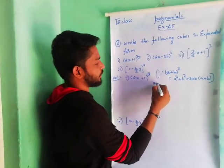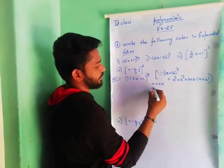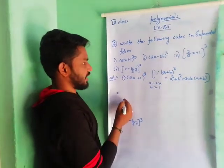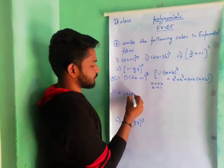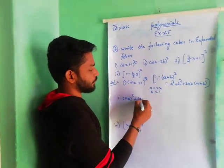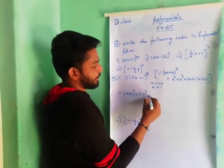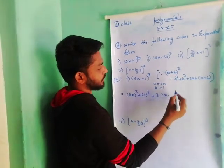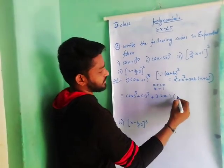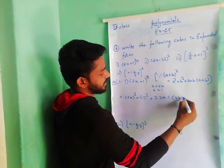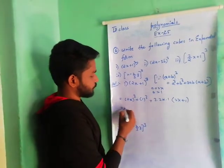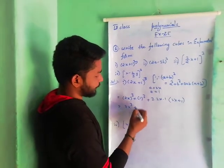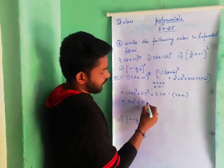Here a value is 2x, b value is 1. Now we have to substitute: a cube means (2x) whole cube, b cube means 1 cube, plus 3ab means 3 into a value 2x, b value 1, into (a + b) which is (2x + 1).